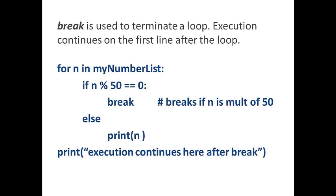So in this example, the for loop is going to increment through my number list until it reaches a number that is divisible by 50, and then it will break. And when it breaks, it's going to jump right down to this print statement. So execution of the for loop stops immediately.